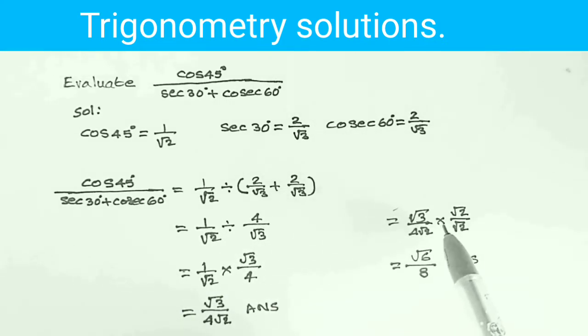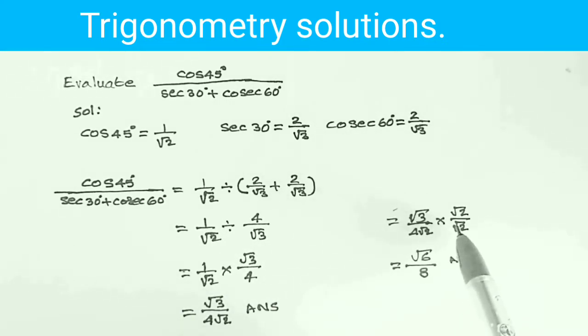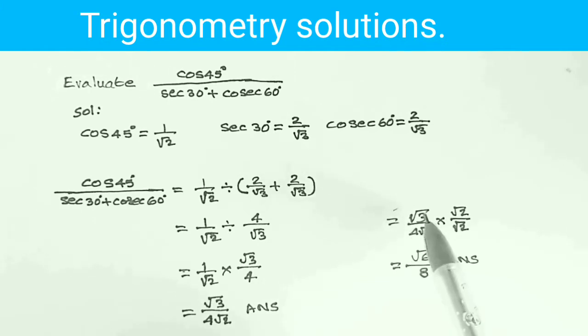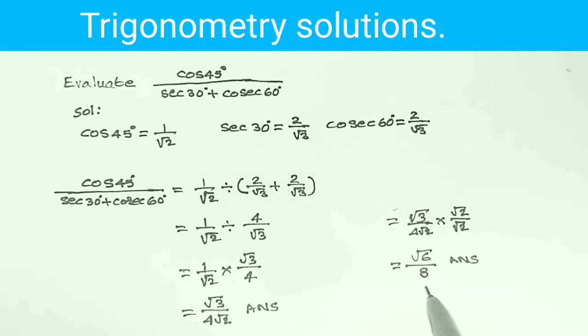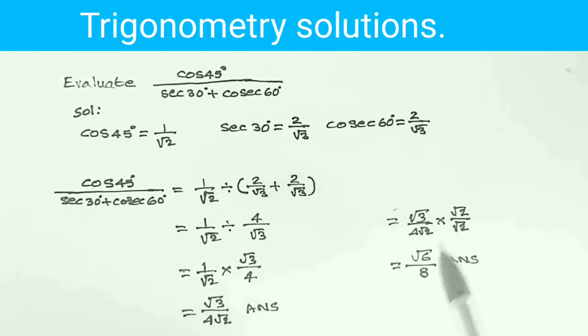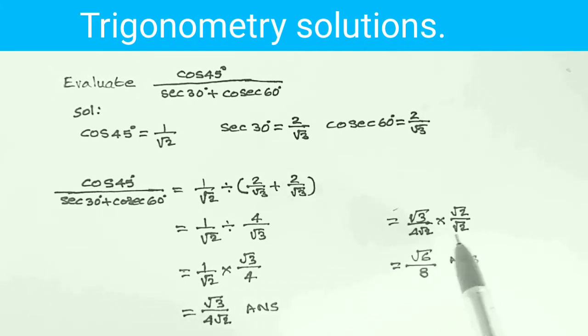Or, rationalizing the denominator: multiply both numerator and denominator by root 2. Root 3 into root 2 is root 6. 4 root 2 into root 2 is 8. So the answer is root 6 by 8.